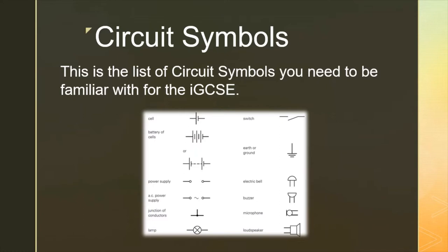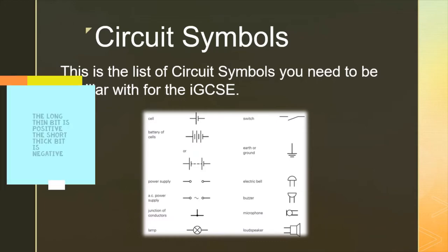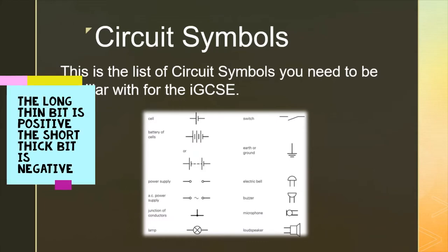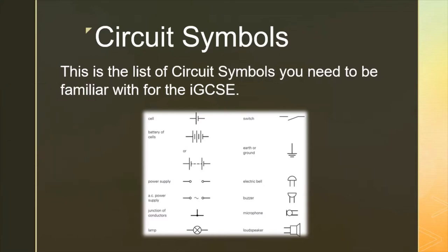We're going to start in the top left-hand corner here, and we have the symbol for a cell. If we put multiple cells in series, we get what we call a battery. There are two different symbols for a battery: one is when they're just in series, and the other has a dashed line in between. They're identical — they're both batteries. There's no difference between the two; it's just two different symbols for the same thing.